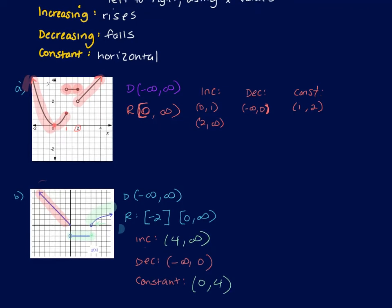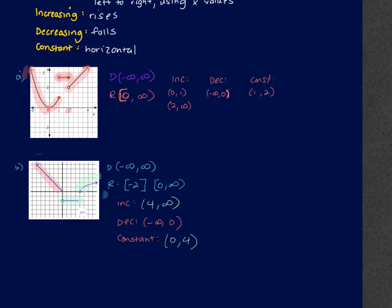Your interval notation is going to be entered in on your graph as short answer. Anything with an infinity is going to say the word 'infinity.' There will be no spaces. If it happens more than once, you can put a comma or leave it without space — both will be marked correct. Just be really careful with your brackets and parentheses.